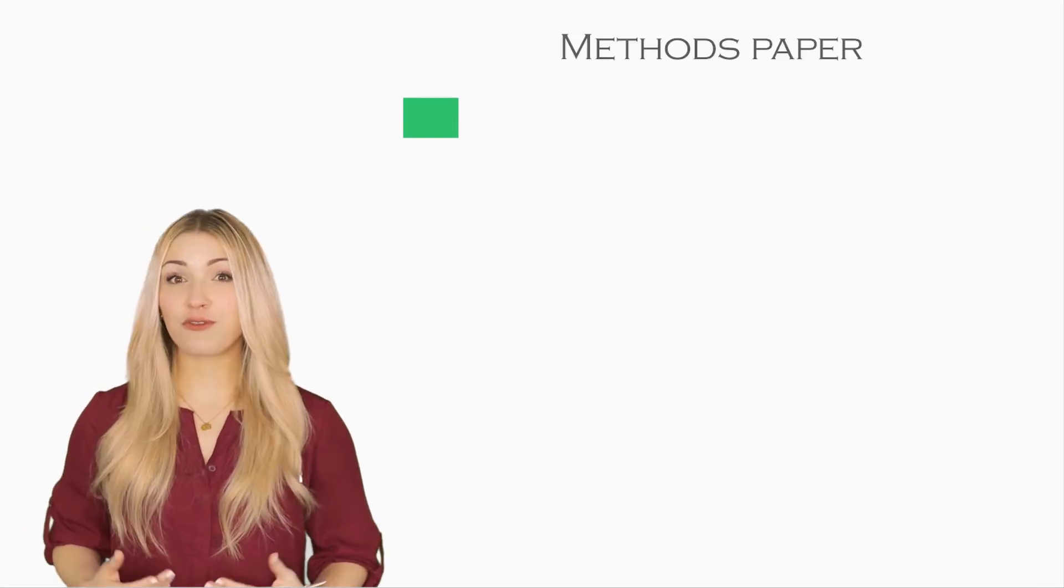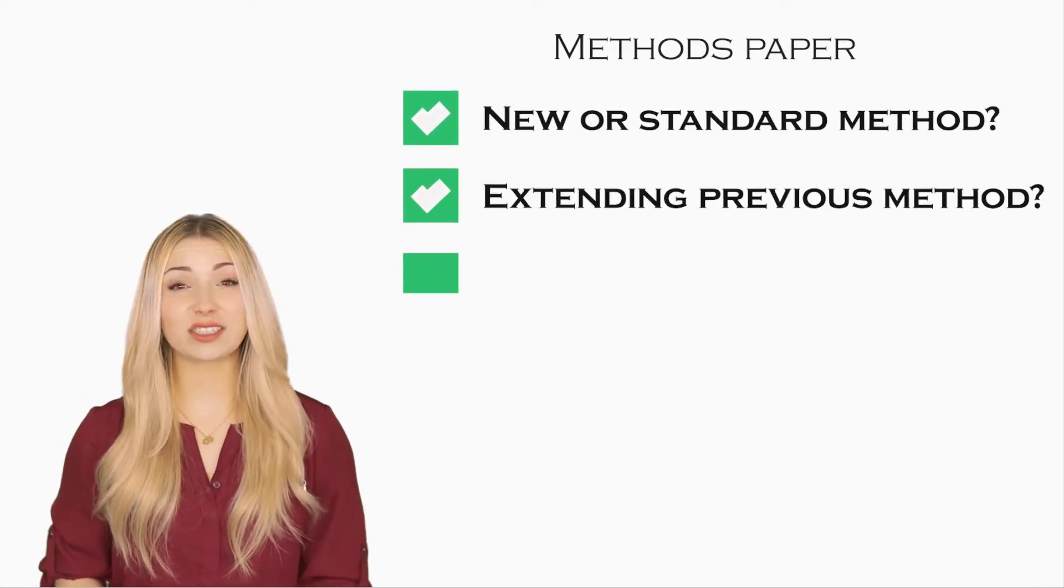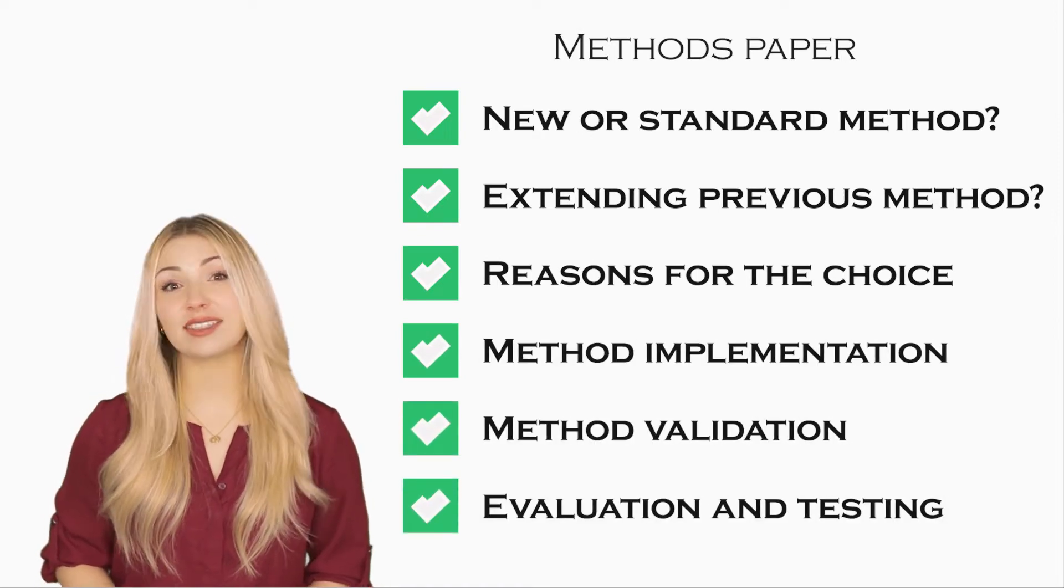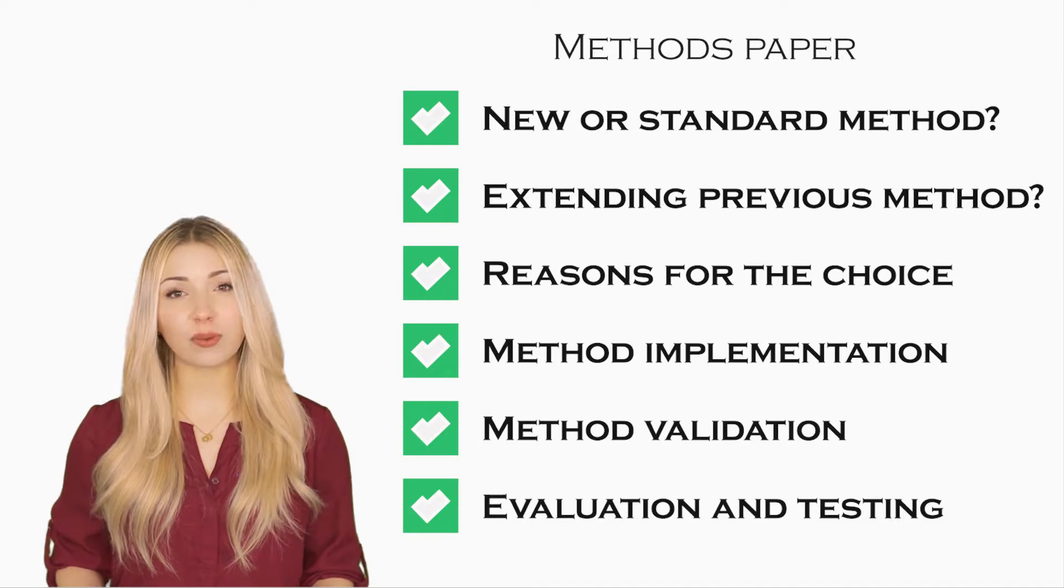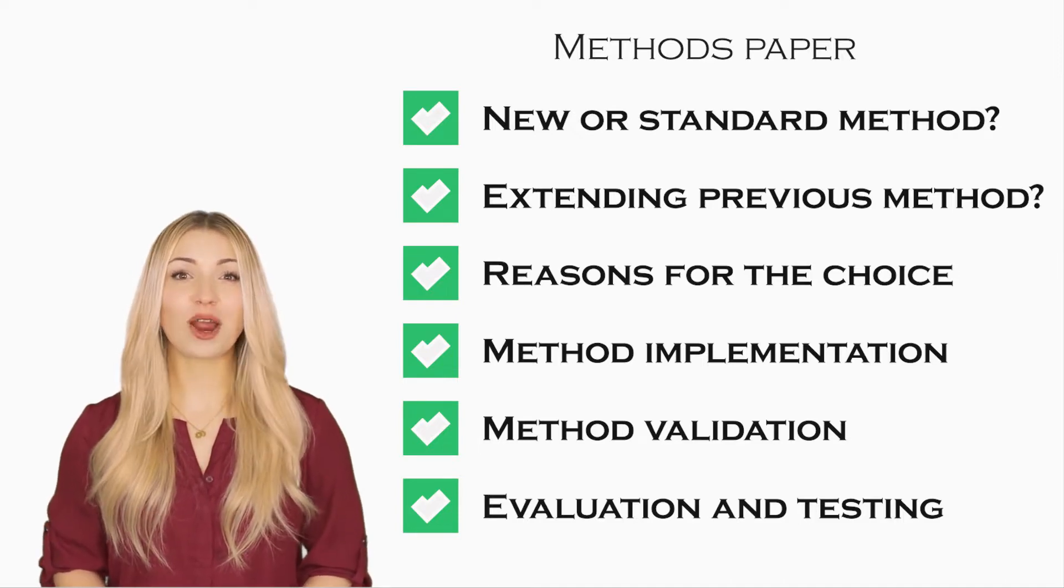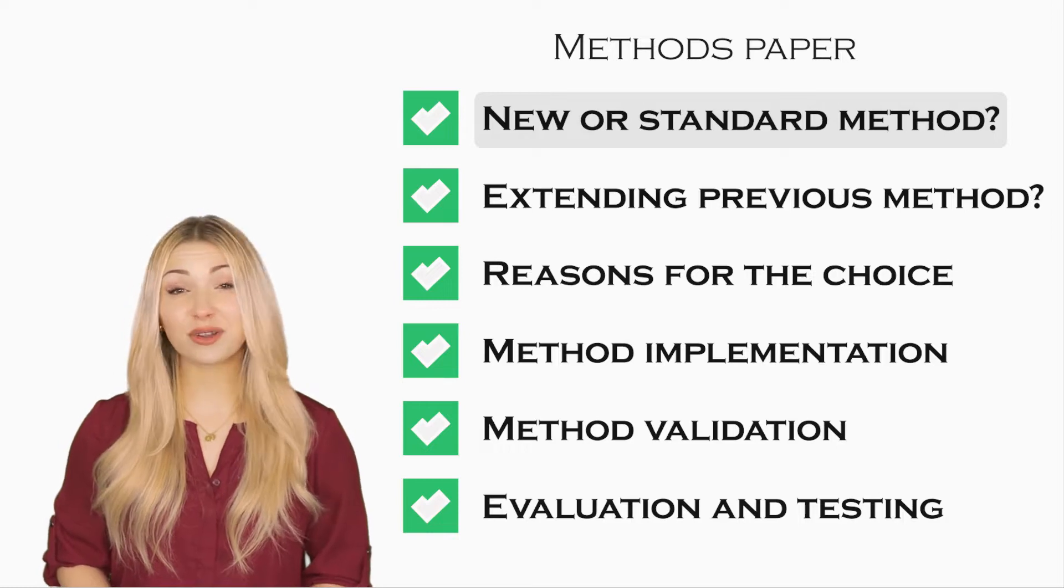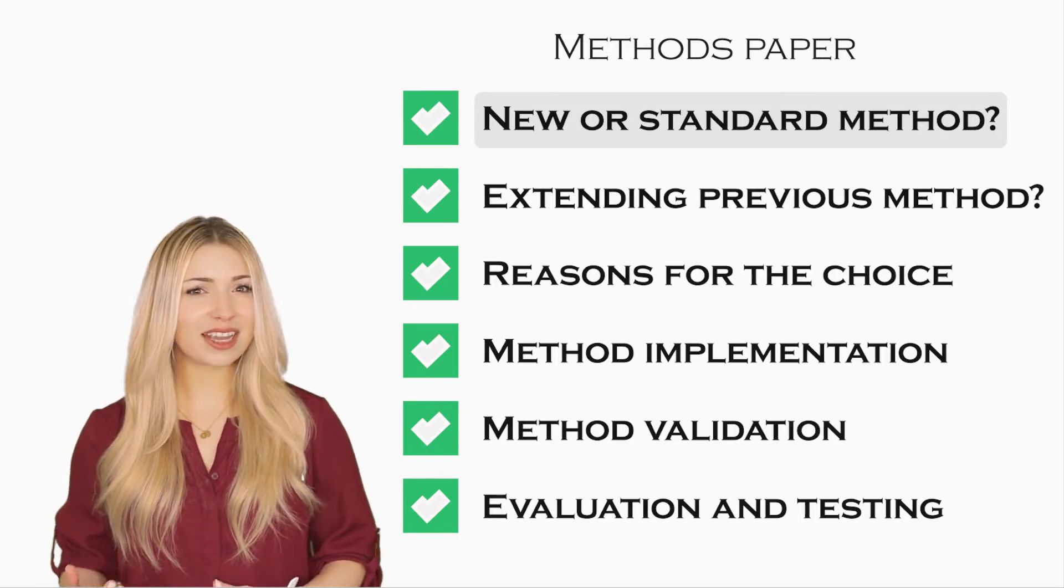We will look at some examples of Materials and Methods structure in different disciplines. If you are writing an Engineering Sciences research paper in which you are introducing a new method, your Materials and Methods section would typically include the following information. You can start with the top level summary of the method. You can try to answer these questions. Are you proposing a new method?